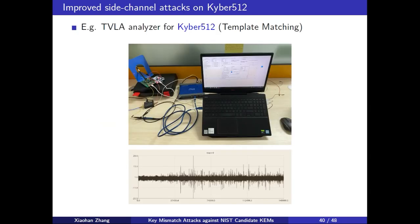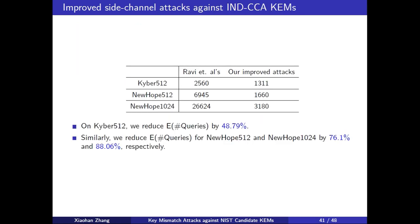We can give an example on Kyber512. The first figure is our experimental equipment, and the second figure is TVLA analyzer for Kyber512 during stage 2, the template matching stage. With our improved side-channel attacks against IND-CCA KEMs, we can give the results in the table. On Kyber512, we can reduce the number of queries by 48.79%. For NewHope, we can reduce the number of queries by 76.1% and 88.06% respectively.